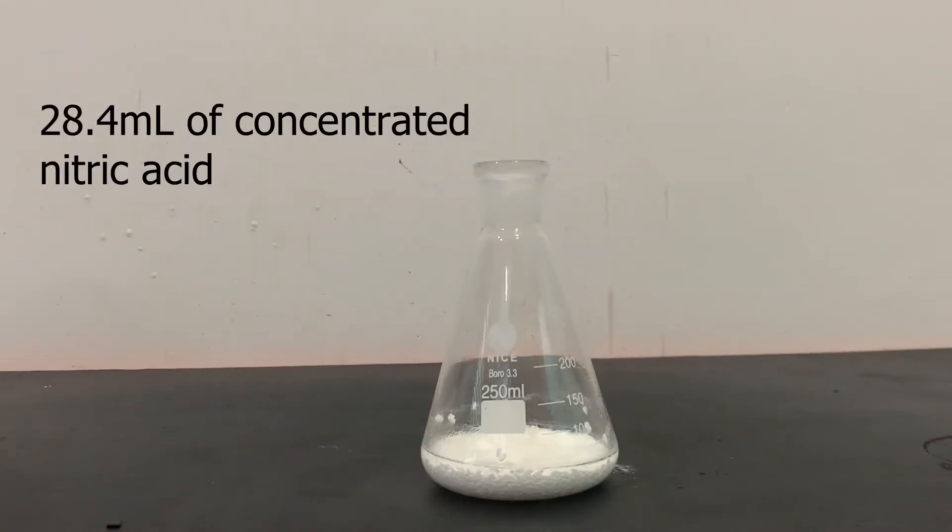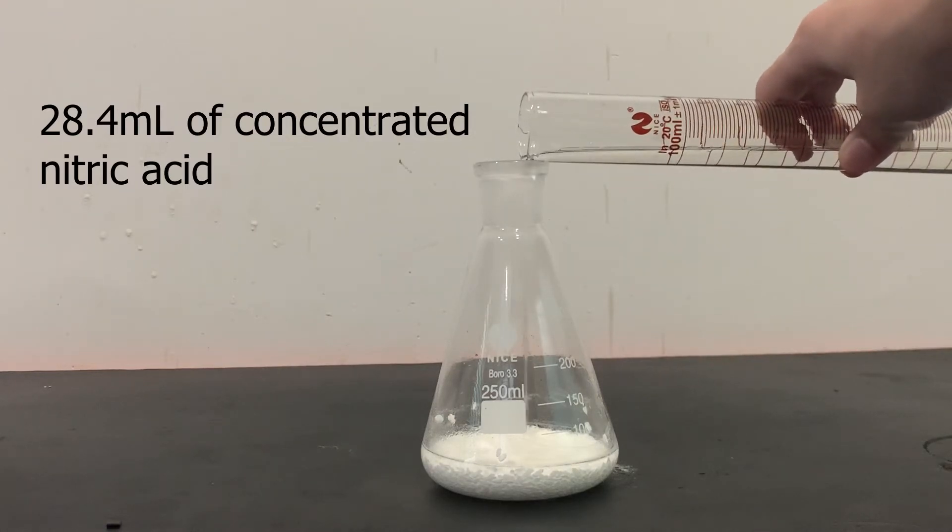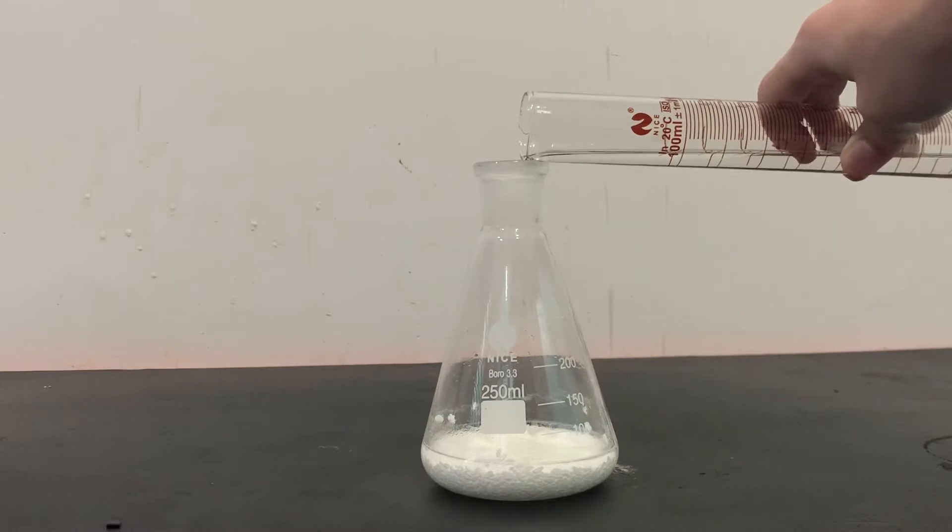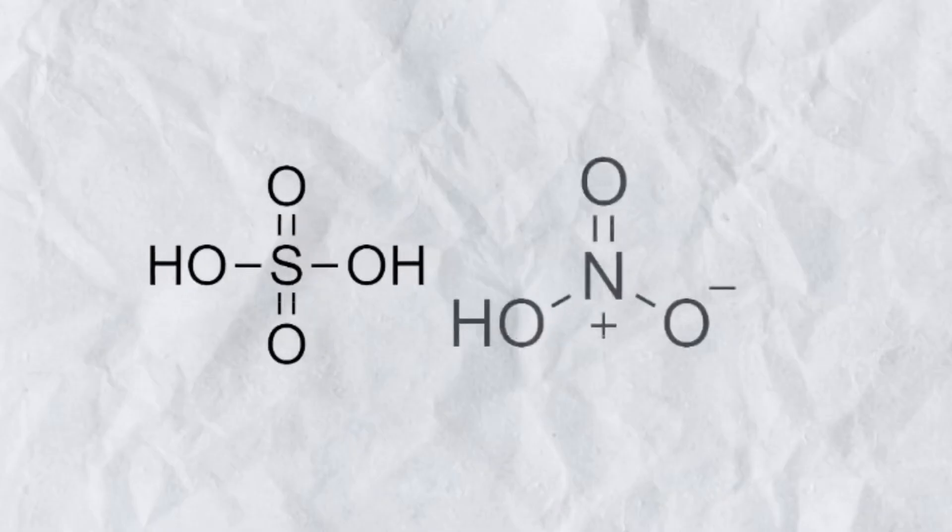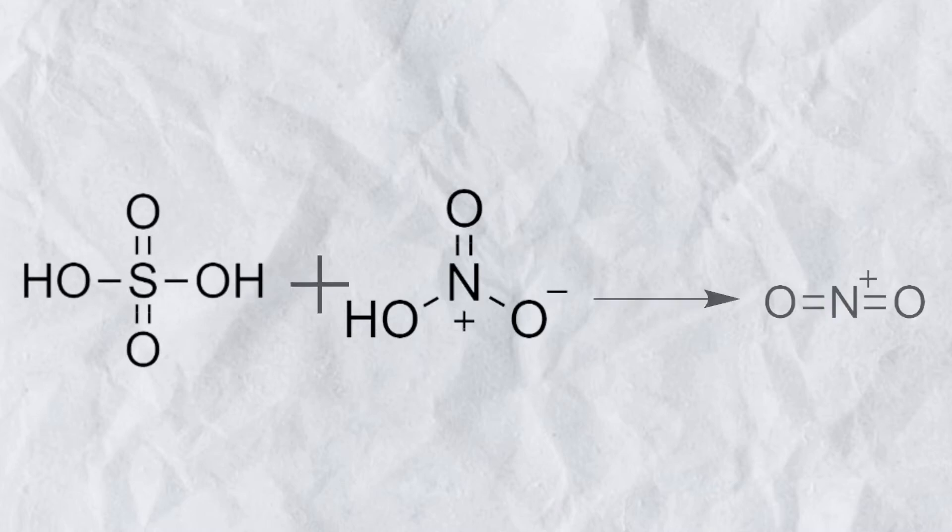Once all the sulfuric acid is added, I will begin to slowly add the 28.4 milliliters of concentrated nitric acid. As the nitric acid is added to the sulfuric acid, nitric acid accepts a proton from the sulfuric acid and forms the nitronium ion.